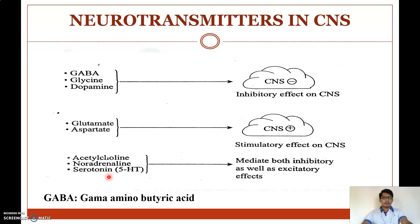Other neurotransmitters present in the CNS are acetylcholine, noradrenaline, and serotonin (5-hydroxytryptamine), which can mediate both inhibitory as well as excitatory effects.